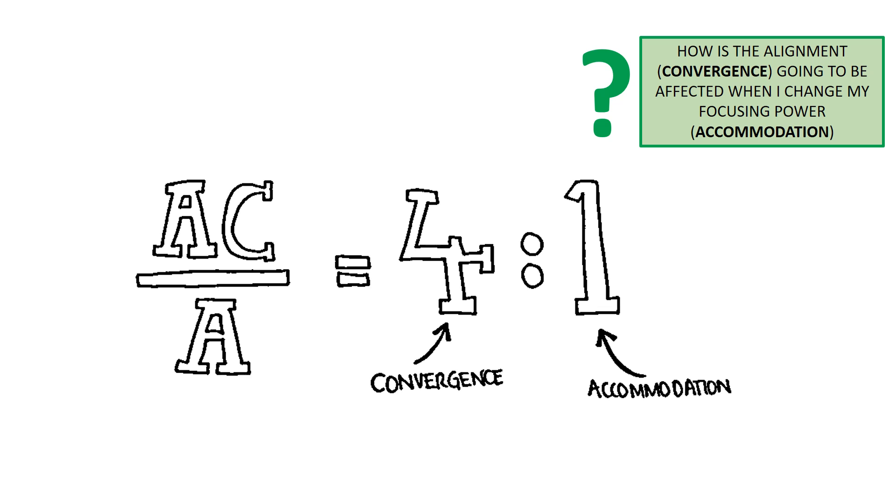There are a number of ways to test the ACA ratio. I'm going to talk about the one that I find the most simple, using the Fourier card.